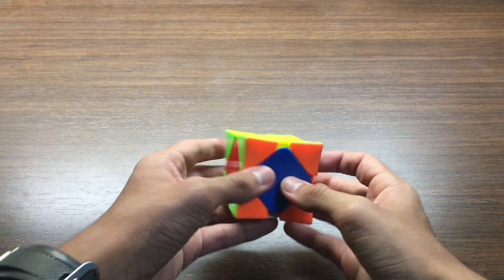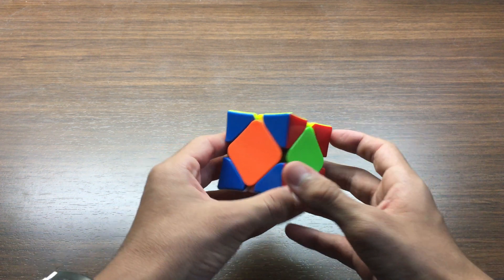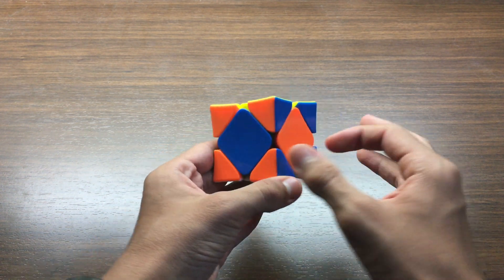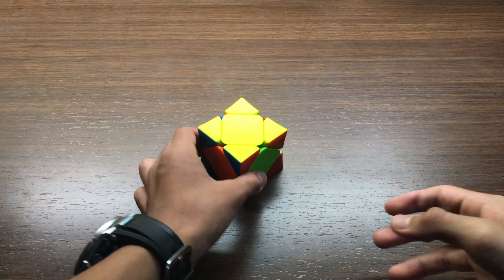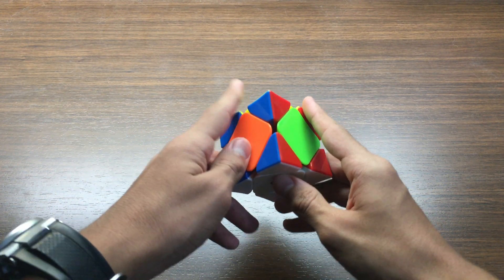So the next case is called the Z perm. These two centers need to be swapped and these two centers need to be swapped. The algorithm, however, is not as easy to execute.